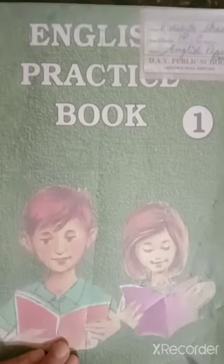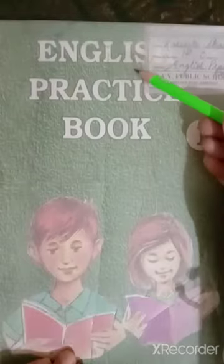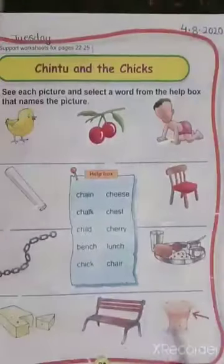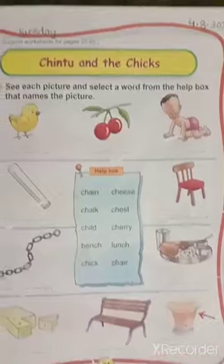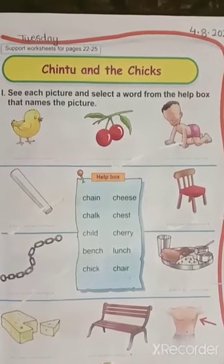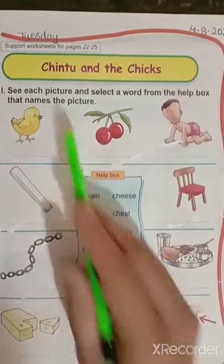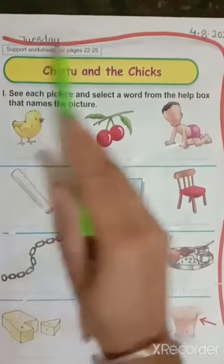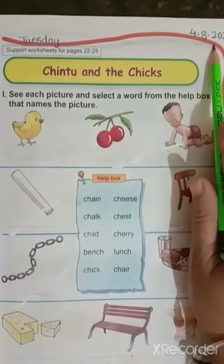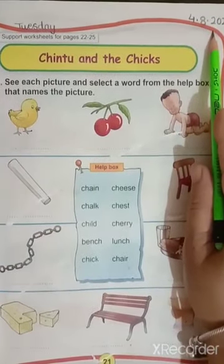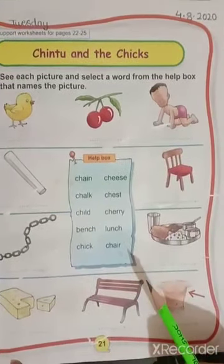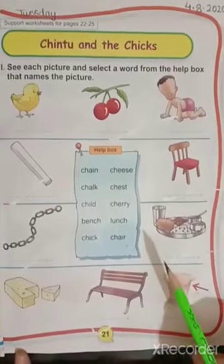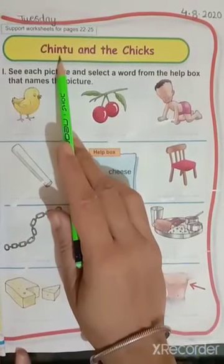Good morning children. Today we will do work in English practice book. Open page number 21. Children, first of all write day and date on the top of this page. I hope you have written. Now let's read the heading.